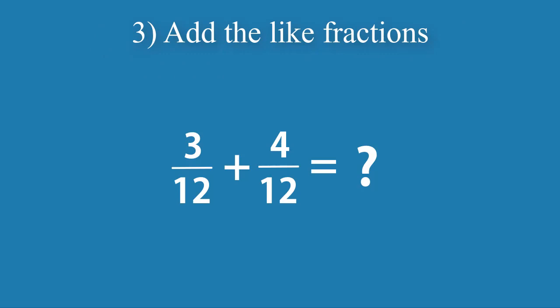Step number 3: Add the like fractions. Now we can do 3 twelfths plus 4 twelfths to get a final answer of 7 twelfths.